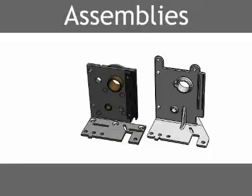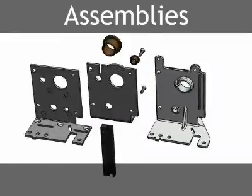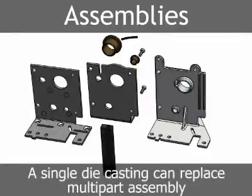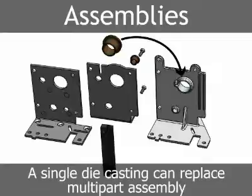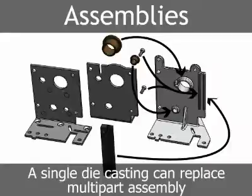Assemblies present major opportunities for a die cast product advantage. In many product applications, the individual parts of a multiple part assembly can be combined onto one die cast part. Combining multiple part assemblies into one die cast part leads to reduced cost and often improved reliability. Replacing multiple part assemblies with a single die casting is one of the most powerful design advantages provided by die castings.